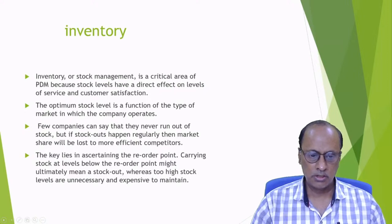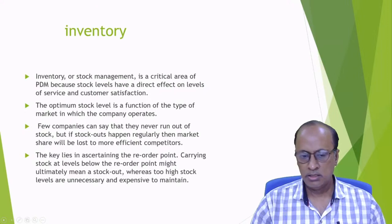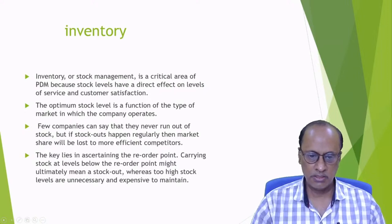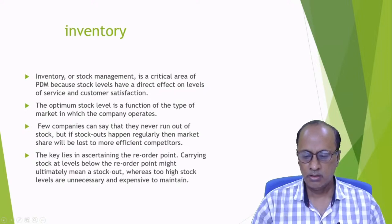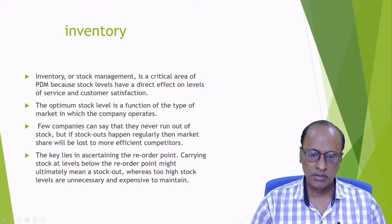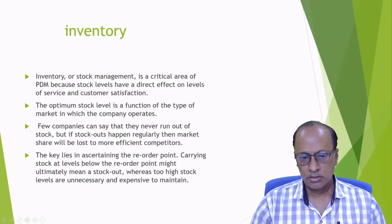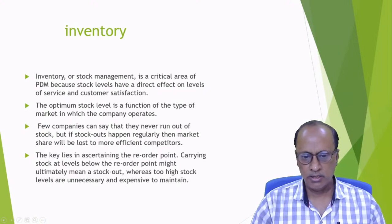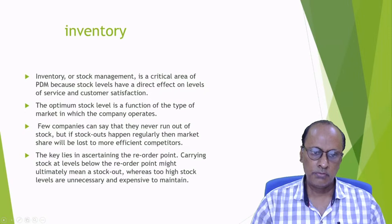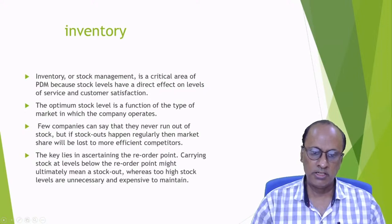Companies should maintain a balance through the economic order quantity — an optimum level of inventory. Inventory and stock management is very crucial in any PDM system. The optimum stock level is a function of the type of market, and companies should always maintain a balance between too low and too high inventory so that the dangers of stock-out or excess cost can be easily tackled.